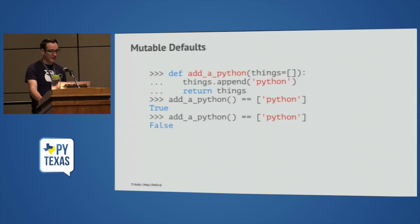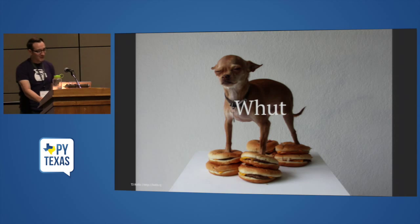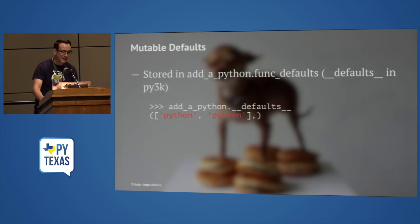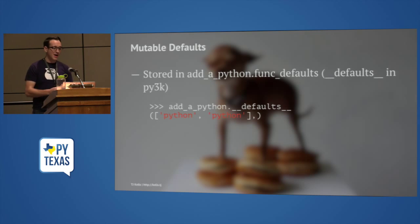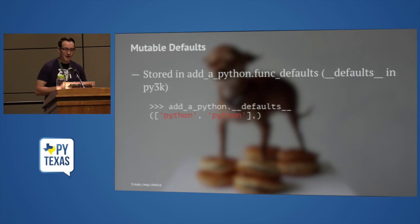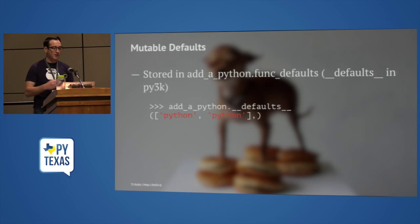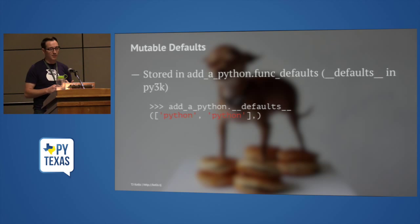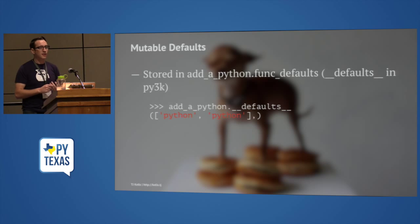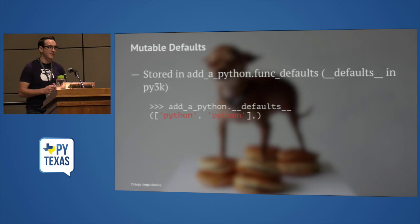What happened here is that when functions are compiled in Python, they're compiled only once. There is a compilation step where your code is compiled into code objects. This function has a code object created, and it has a single property — in Python 3 it's called __defaults__, in Python 2 it's func_defaults. That data structure is only created one time during the compile step, so you end up appending to it over and over again.